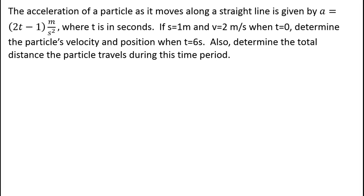So let's read this whole thing out. The acceleration of a particle as it moves along a straight line is given by a equals 2t minus 1 meter per second squared. So we've got the acceleration as a function where t is in seconds. If s equals 1 meter — s being displacement — and v equals 2 meters per second, v being velocity, when t is equal to 0.